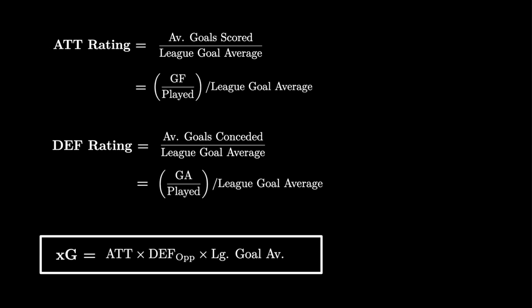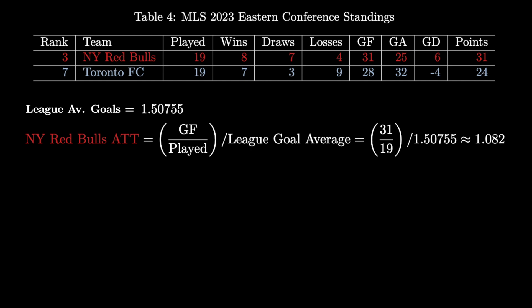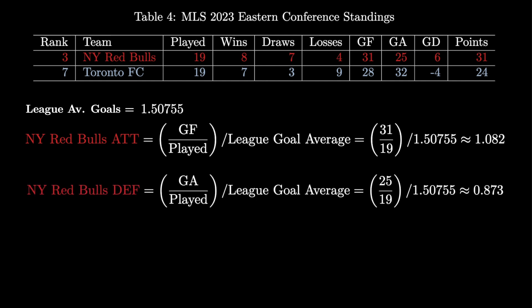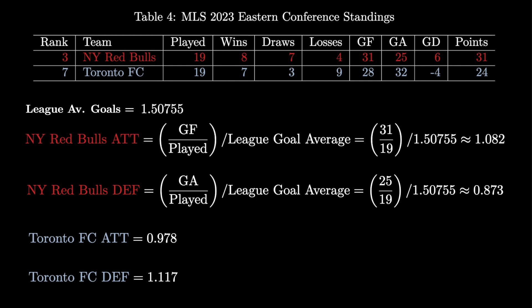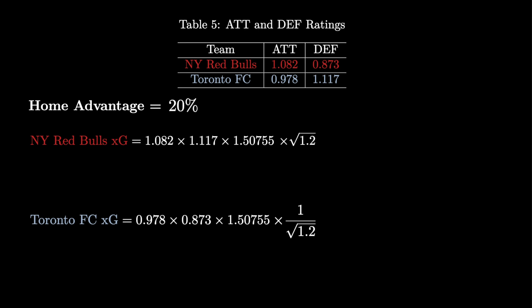Next we need to calculate the expected number of goals for each team in a match. This is done by multiplying the attacking rating of one team by the defensive rating of the opposing team, then multiplying by the league's average goals per game. For example, in the game where the New York Red Bulls are hosting Toronto: New York has an attack rating of 1.082 — meaning they are 8.2% better than the league average attacking-wise — and a defence rating of 0.873, meaning they concede 12.7% less goals than the average side. Toronto has an attack rating of 0.978 and a defence rating of 1.117, both below average.